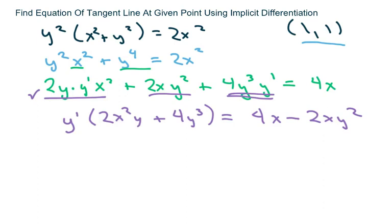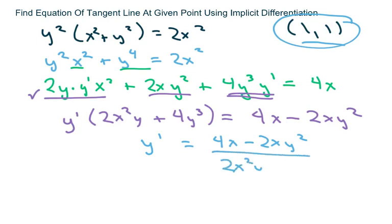So I'm going to go ahead and divide. So you get 4x minus 2xy squared. You know you could put the 1 in first and then solve. Sometimes it makes it easier if you do that.